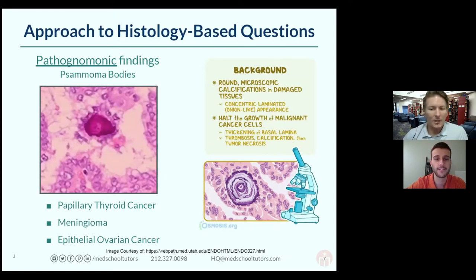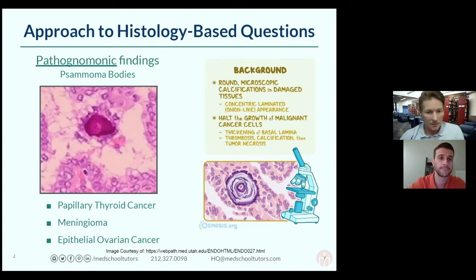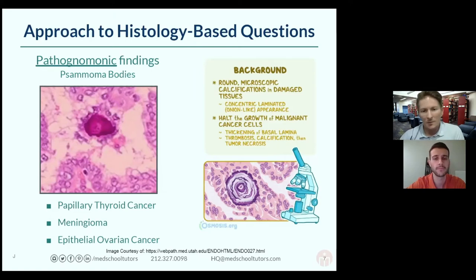You'll generally see this lamellated circular picture in the middle of the field. Histological images on the exam are not designed to be mean — they'll usually show you the high-yield finding near the middle of the image. You can find contextual clues like colloid in the periphery, but usually we're not looking at the very edges to identify our diagnosis. Look towards the middle for the pathognomonic finding, identify the organ, and you can often answer the question based on the image alone.